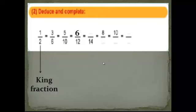Again, the king fraction: 1 over 2 equals space over 14. 2 becomes 14, so we multiply by 7: 2 by 7 equals 14, so 1 by 7 equals 7. Again, king fraction: 1 over 2 equals 8 over space. 1 becomes 8, so we multiply by 8: 1 by 8 equals 8, so 2 by 8 equals 16. Again: 1 over 2 equals 10 over space. 1 by 10 equals 10, so 2 by 10 equals 20.